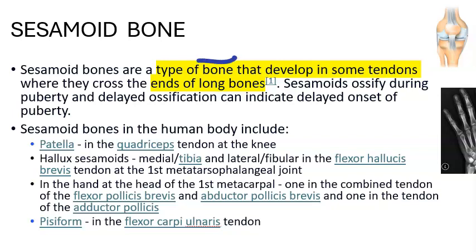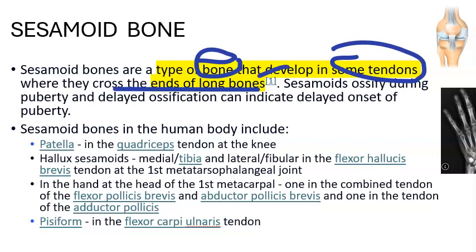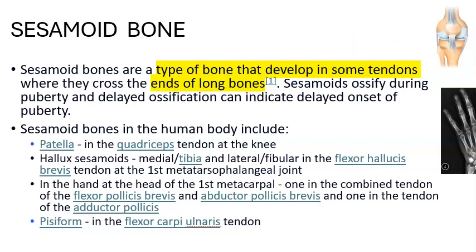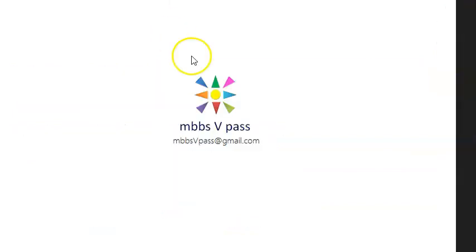So in summary: it's a type of bone that develops in tendons at the end of long bones in the joint, ossifies at puberty, and its job is to reduce the stress on the tendon. All keywords for the definition are covered.